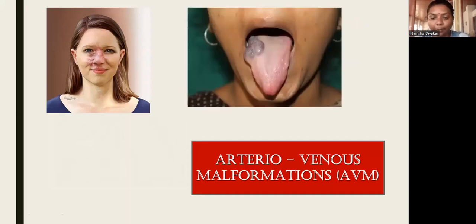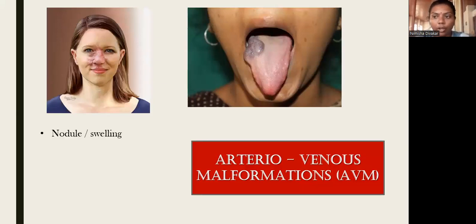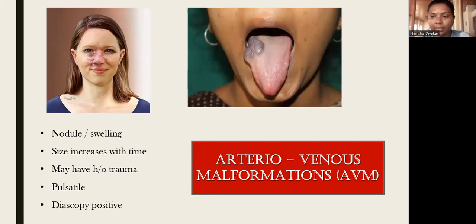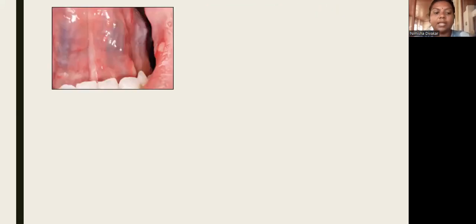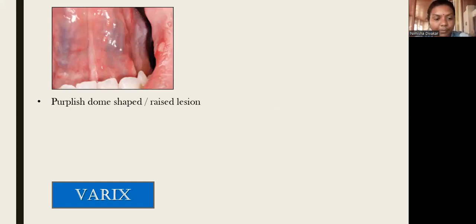The next entity is arteriovenous malformation, which is also a vascular malformation. It is very important to recognize in diagnosis because it can cause serious complications. There will be a nodule or swelling that increases in size with time, and the patient may have a history of trauma. These lesions are pulsatile and diascopy-positive. Extreme care must be taken while dealing with arteriovenous malformations in the oral cavity, as they can result in severe hemorrhage.